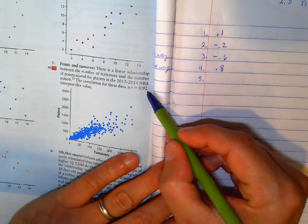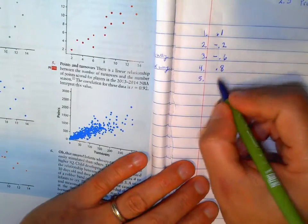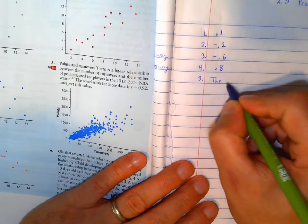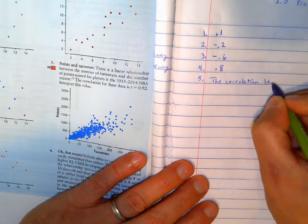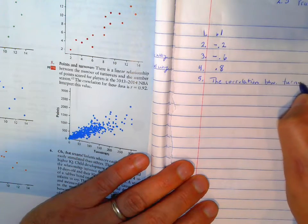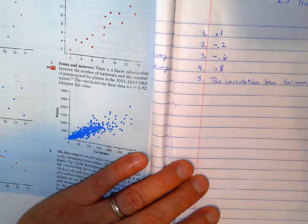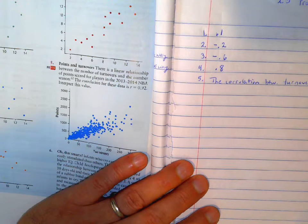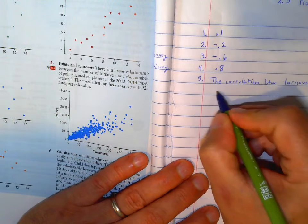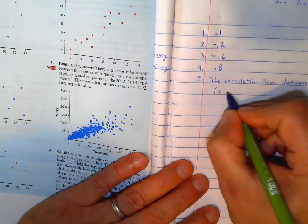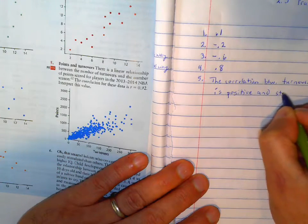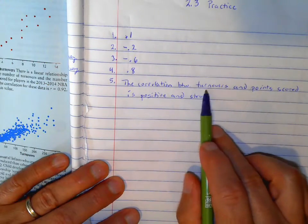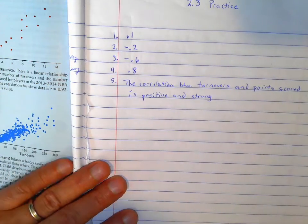But anyway, let's interpret this 0.92. What does that mean? It means that the correlation between turnovers and points scored is positive and strong. So it's always good to include context between turnovers and points scored. It gives you an idea of what you're talking about there.